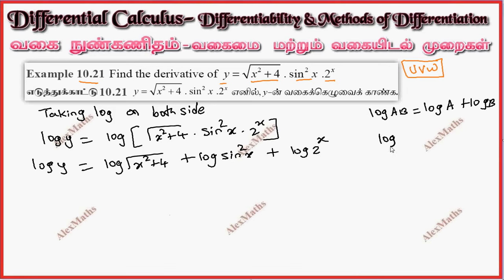Now log rule - log a^b means the power comes to the front. Now log of root has power of one-half. One-half log (x² + 4). This has 2 in front, which is the power.